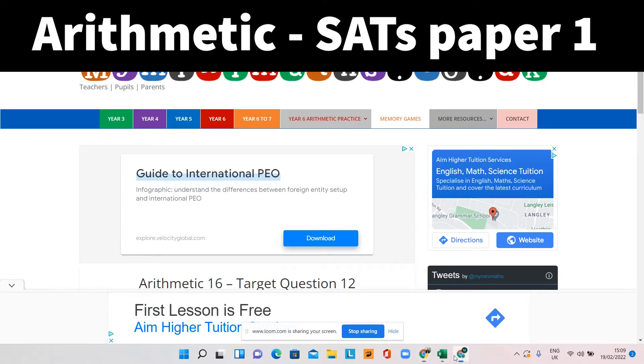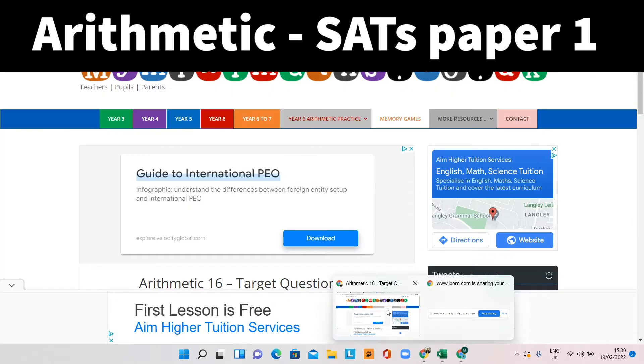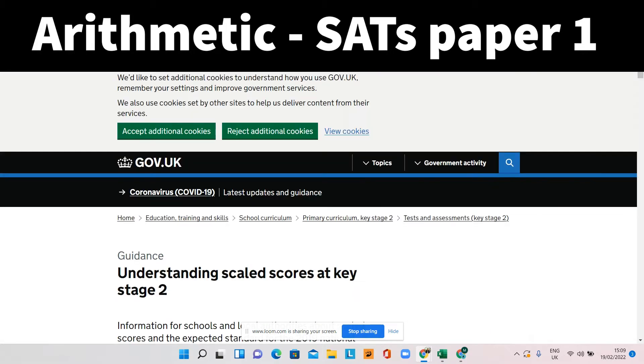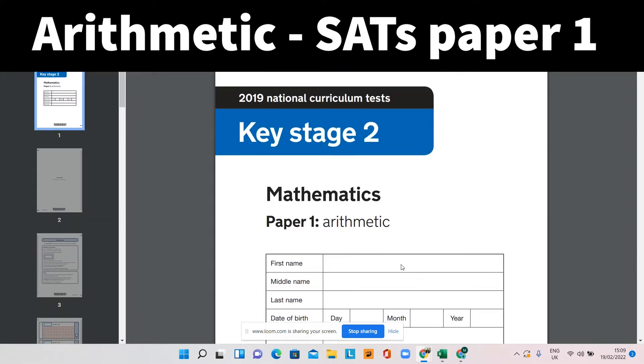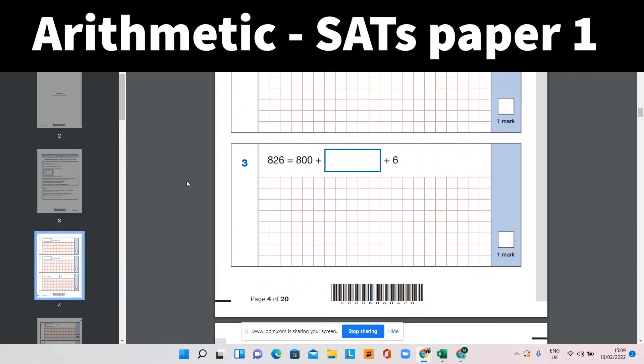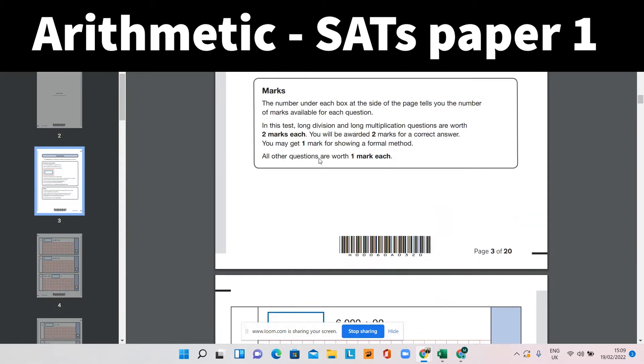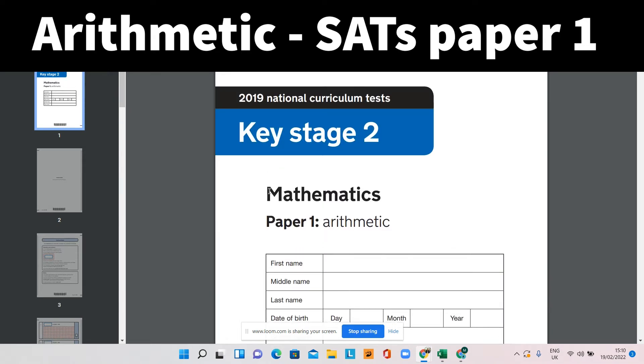I'm going to just have a look at something here. So this is, first of all, the test. Okay, so you can see it here. The paper one arithmetic, this is the key stage two SATs from 2019. It's available online if you want to have a look at it. But basically, this is the first paper of three papers that they will attempt. And this one is out of 40.